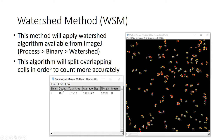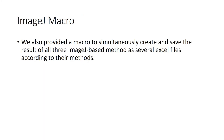With the Watershed Method, the count is around 156, the total area is relatively smaller at around 181,217 pixels, and the average size is around 1,161.647 pixels.